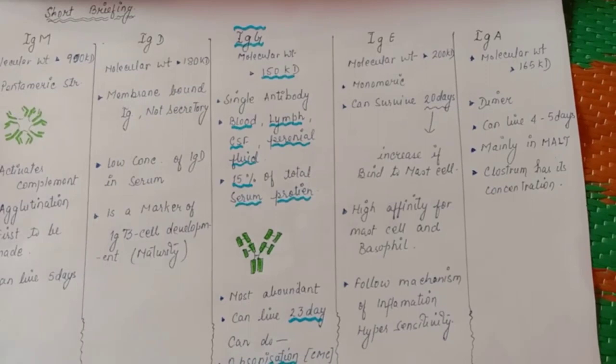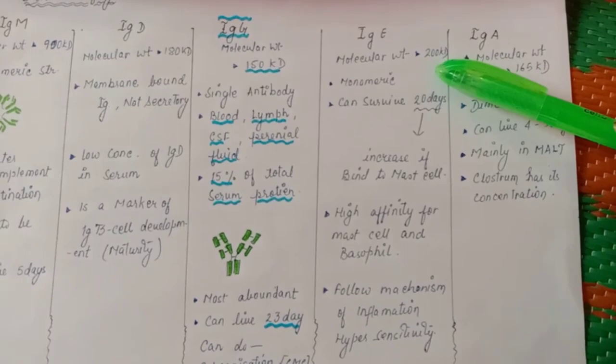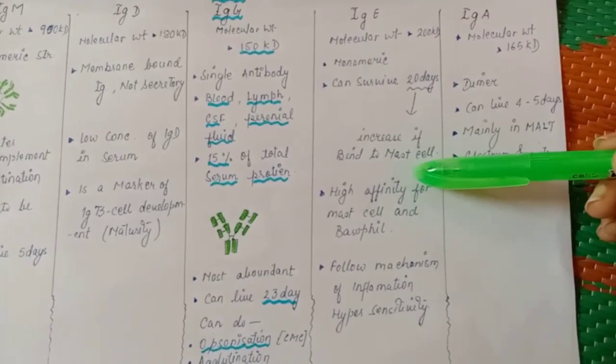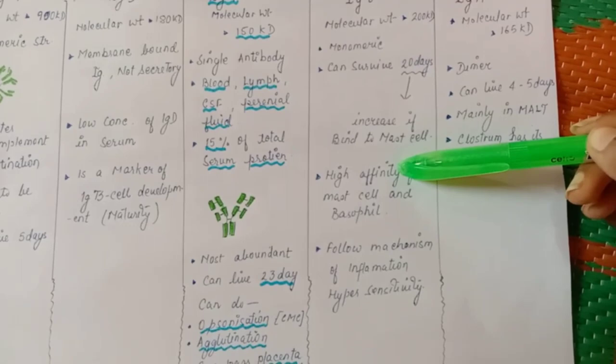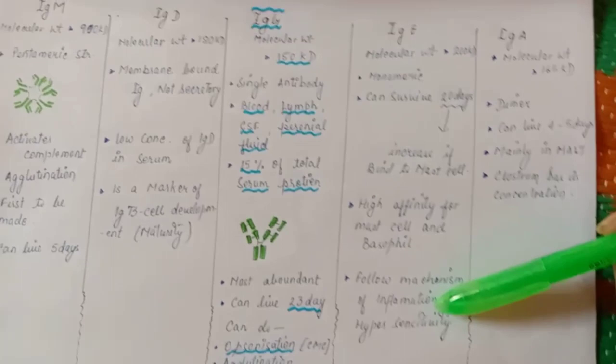Now coming toward IgE. IgE has molecular weight of about 200 kilodalton. It is monomeric. Can live up to 20 days. But the unique feature is it can bind to mast cell, have affinity toward mast cell and basophil and can increase its lifespan. This causes hypersensitivity reaction. We will study about that.